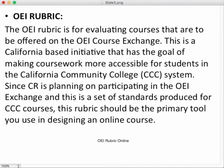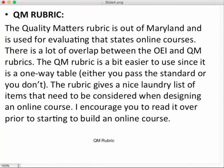There's another very nice rubric called the QM rubric, or Quality Matters rubric, out of the state of Maryland. There's a lot of overlap between the OEI and QM rubrics, but the QM rubric is easier to use since it's a one-way table — either you pass the individual standards or you don't. It's broken down in fine detail and gives you a laundry list of items to consider when designing an online course. We'll ask you questions about it on the quiz, so you should read it.